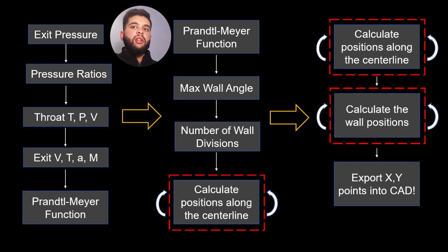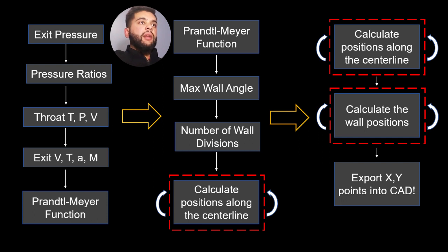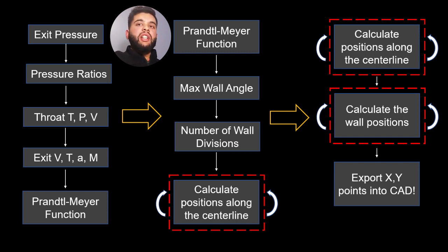Based on the exit pressure calculated from isentropic flow, you get the pressure relation, then your exit velocity, temperature, speed of sound, and Mach number. Then you use the Prandtl-Meyer expansion function — used for expansion waves — to get your max wall angle. From the max wall angle you get the number of wall divisions, then calculate your positions along the center line, then calculate the nozzle wall positions, and finally export the points into CAD. This is the overall architecture of the problem.